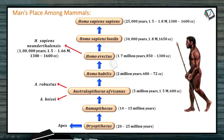Homo sapiens sapiens is the modern-day man. The modern-day man retained the same structure as the man who evolved to become him. Homo sapiens sapiens appeared around 25,000 years ago. Still the same body structure, everything has been retained. Though of course micro-evolution and slow mutations are happening, which gave rise to so many different races among human beings, the basic framework remains the same.